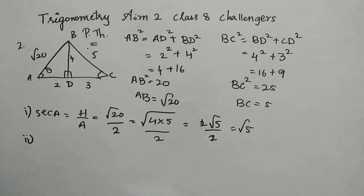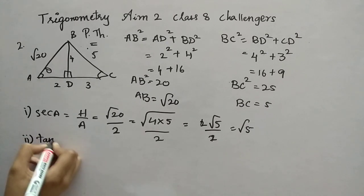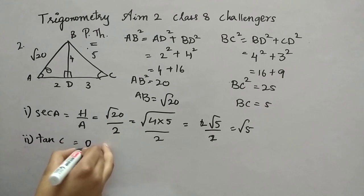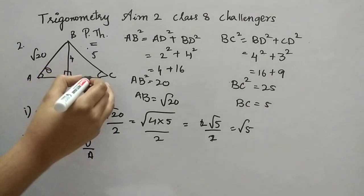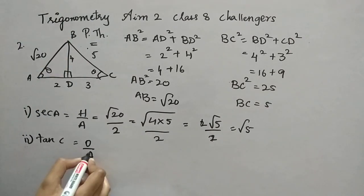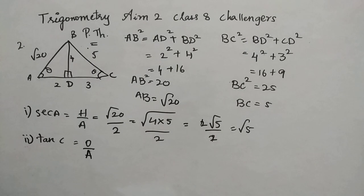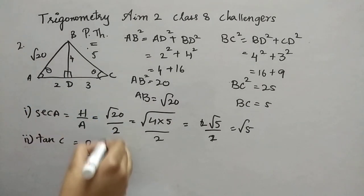Now, second one, question is tan C. So tan is nothing but O by A. So this one, from this point of theta, we have to see. So only from this triangle. O by A, it is opposite by adjacent. One second, I'll just try. So opposite here, it is 3, right? So, sorry, 4, I'm sorry. 4 by adjacent is 3. That's it over.